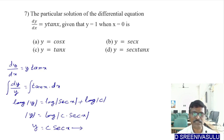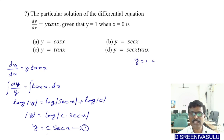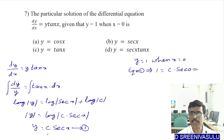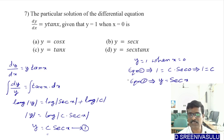This is the general solution. For the particular solution, substitute y = 1 when x = 0: 1 = c·sec(0) = c·1, so c = 1. Therefore the particular solution is y = sec(x). Option B is correct.